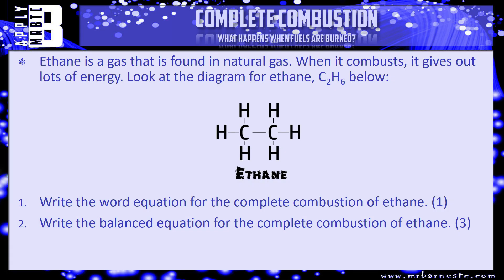Once you can balance, you can do any word and balanced equation. Let's look at an example: ethane is a gas found in natural gas; when it combusts it gives out lots of energy. Look at the diagram for ethane C2H6. Number one: write the word equation for the complete combustion of ethane - that's worth one mark. Number two: write the balanced equation for the complete combustion of ethane - that's worth three marks. The one mark indicates to just put the words, not C2H6; the balanced equation is where you need the symbols. Pause the video, have a go, and we'll see how you've done in a minute.